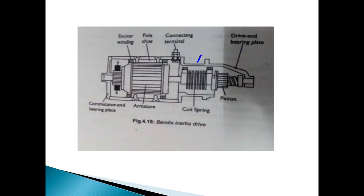When we engage with the flywheel, an anti-drift spring provides resistance. When the solenoid is switched on, torque produces rotation of the shaft. The pinion moves forward and engages with the flywheel via the armature shaft. Due to inertia, the pinion screws forward and meshes with the ring gear, driving the engine to start.